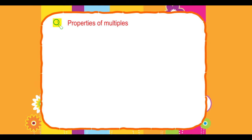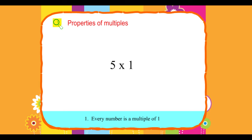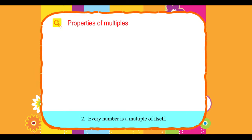Properties of multiples. 1. Every number is a multiple of 1. 2. Every number is a multiple of itself.